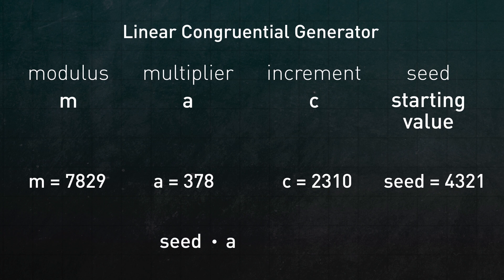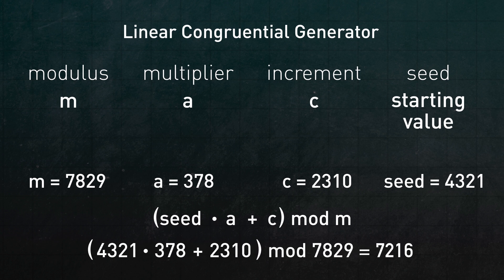Multiply the seed by A, add C to that, and then take the whole thing mod M. In other words, you look at the remainder when it's divided by M. In our example, that gives 7,216. Repeat this over and over to get the rest of the sequence.